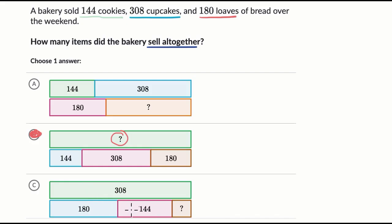Now let's just make sure this one doesn't make sense. This one is saying, if I have 180 and 144 and something else, what is the something else to get to 308? We're not trying to get to 308. 308 is the number of cupcakes. We're trying to get the total. So once again, we want to go with choice B.